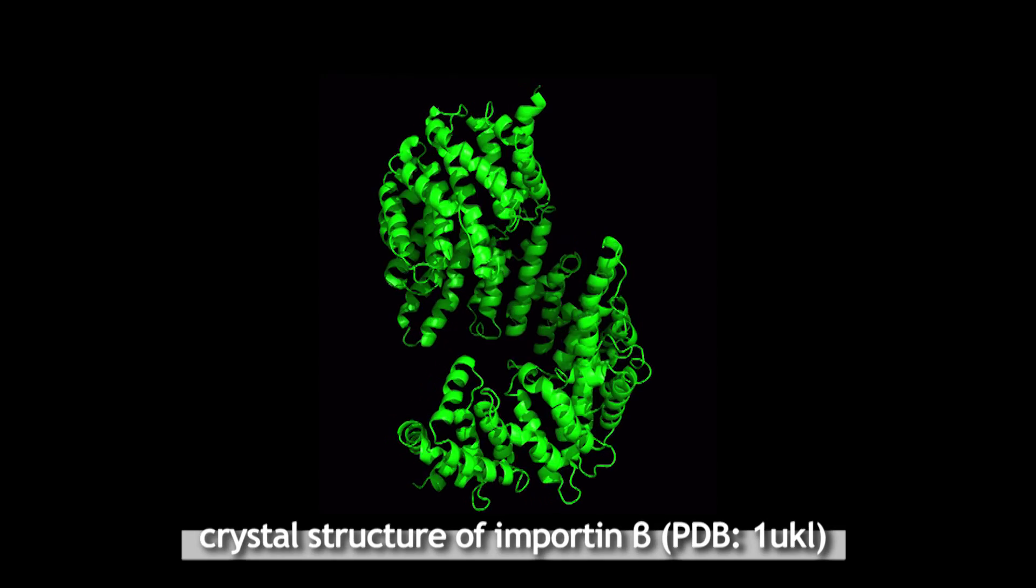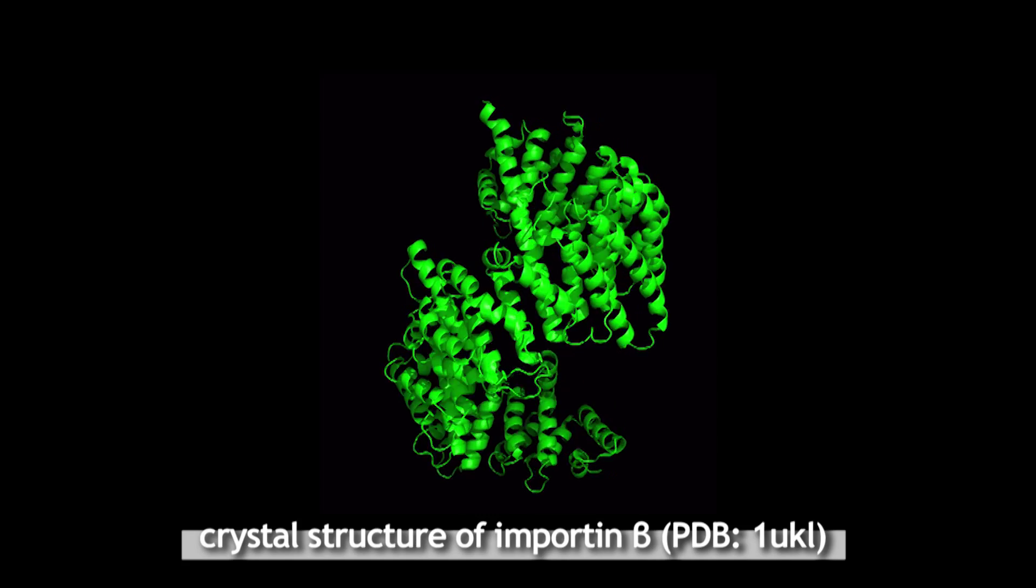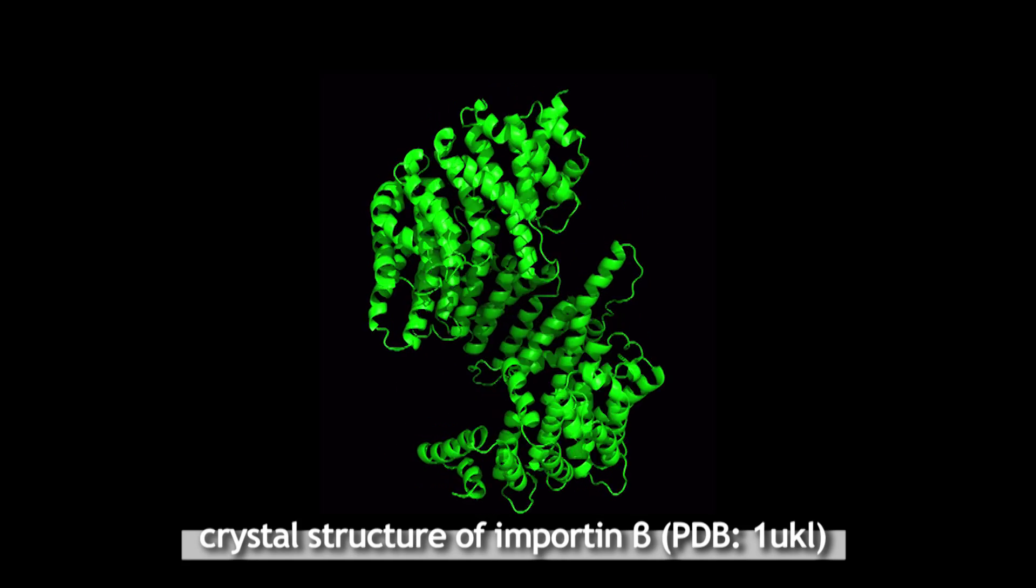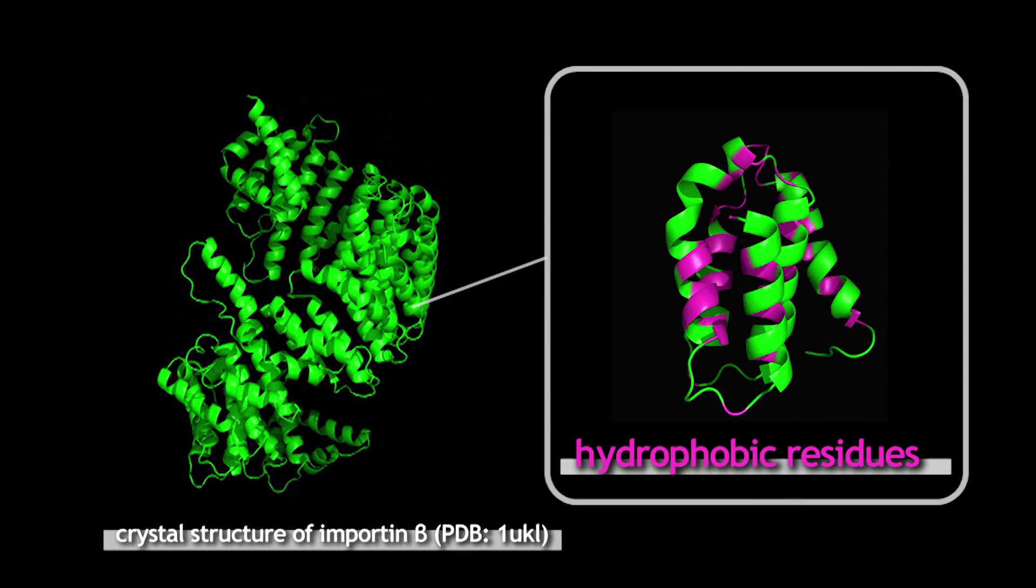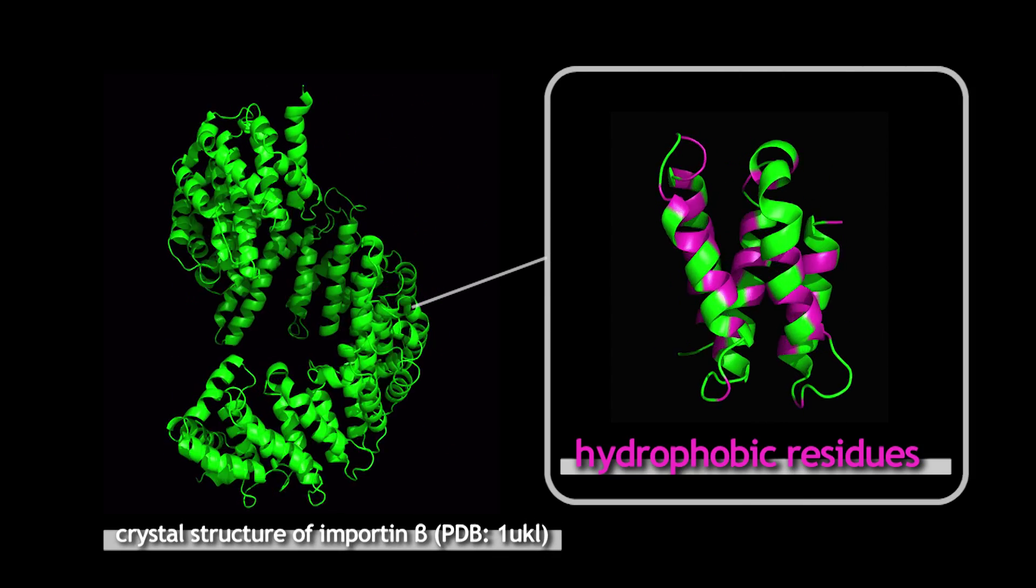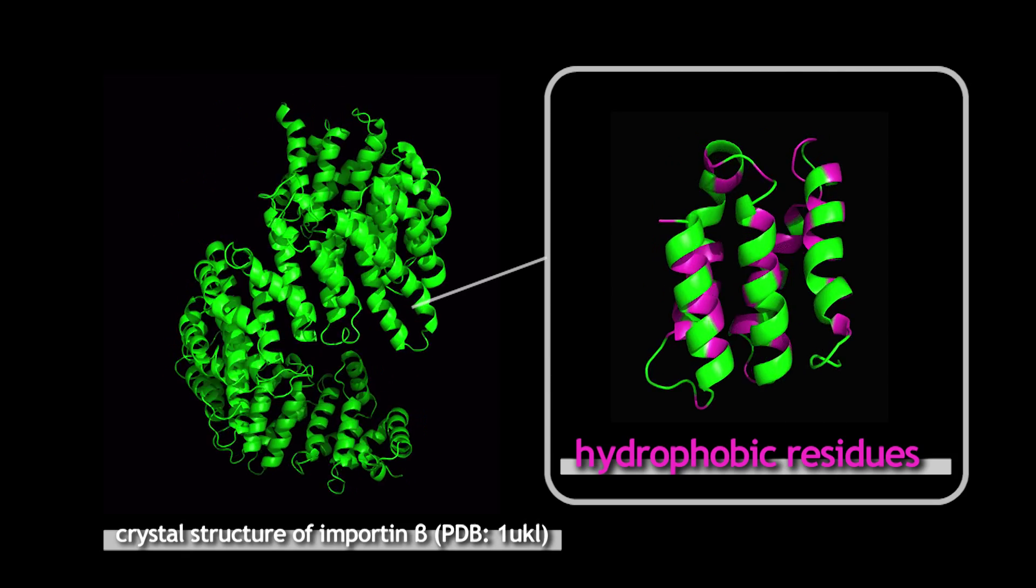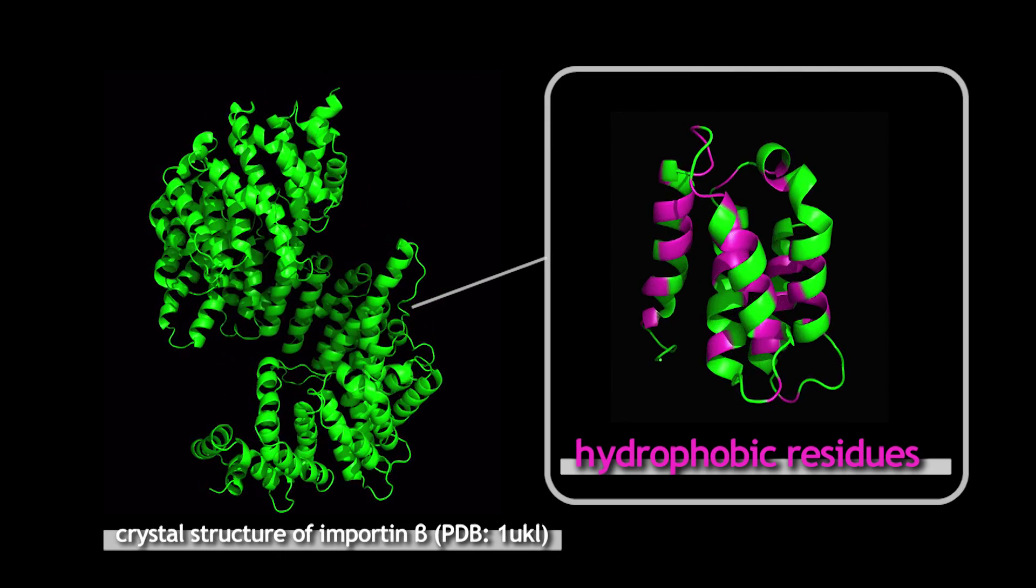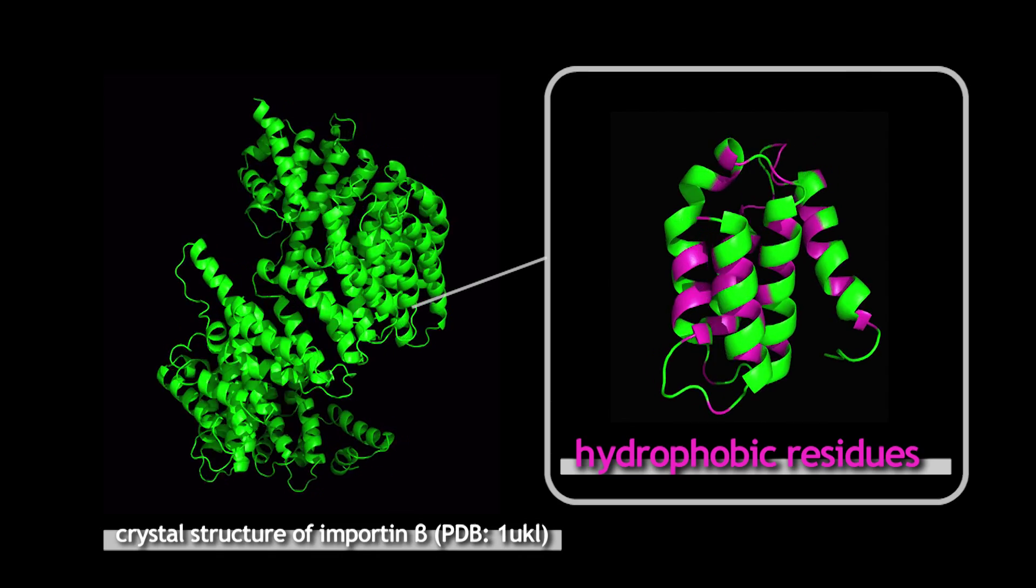This is a crystal structure of importin beta previously reported. It looks like a flexible spring with a number of alpha helices. These helices are all amphiphilic, which means it has both hydrophobic and hydrophilic faces on opposite sides of the cylinder. The hydrophobic surfaces are facing each other, so the hydrophilic side is facing the molecular surface.